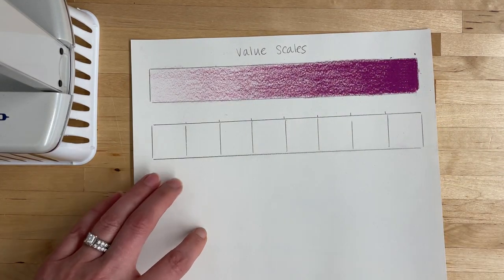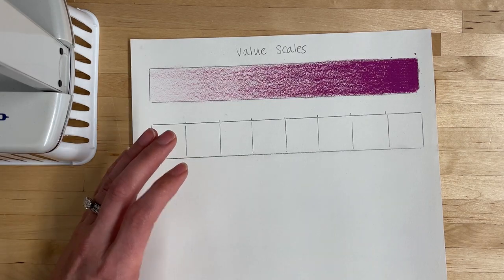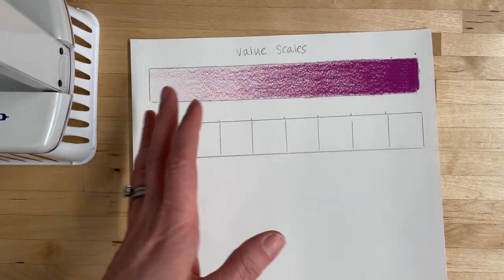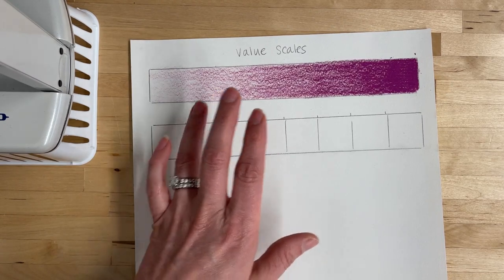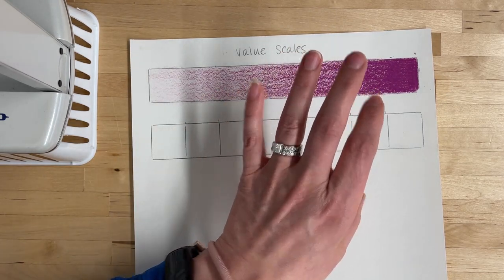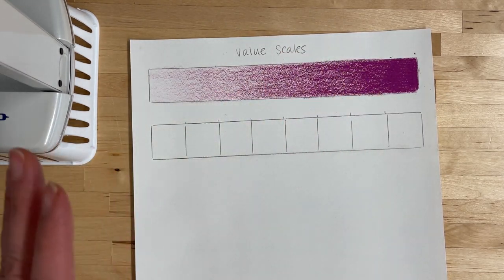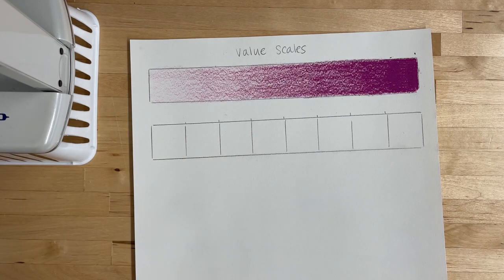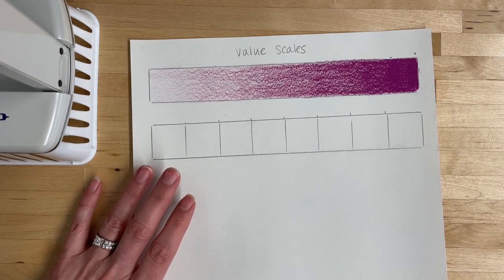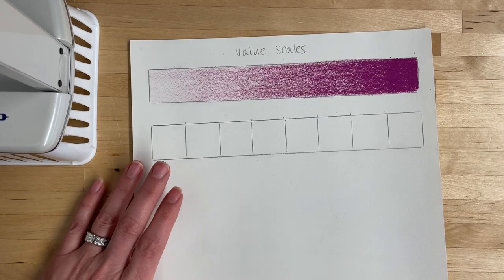When you're done, you should have a nice smooth shading value scale that blends from very light, light, medium, dark, to very dark without any choppiness. If you are struggling with this, definitely practice more than just once if you need to.